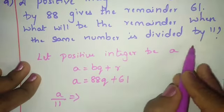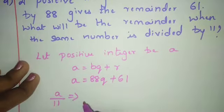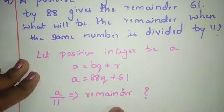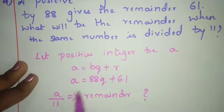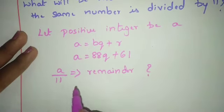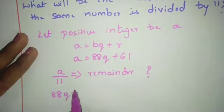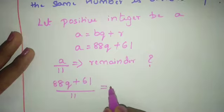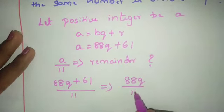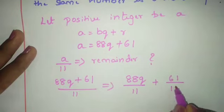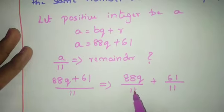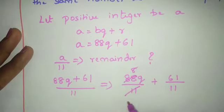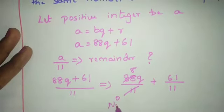Divide (88q + 61) by 11: write it as 88q/11 + 61/11. Since 88 = 8 × 11, 88q divides exactly by 11 leaving no remainder.